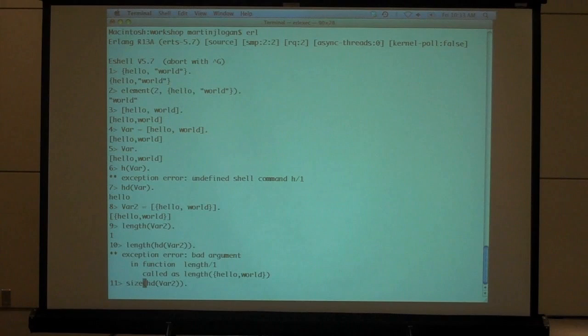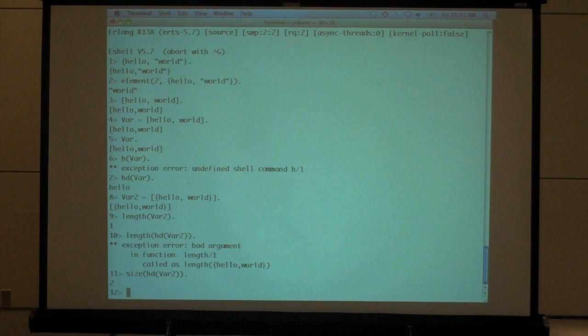If I say size of the head of that list, the head pulls out the first element, which is the only element besides that implicit empty list, and it's a tuple of size two. So they're just different data structures.